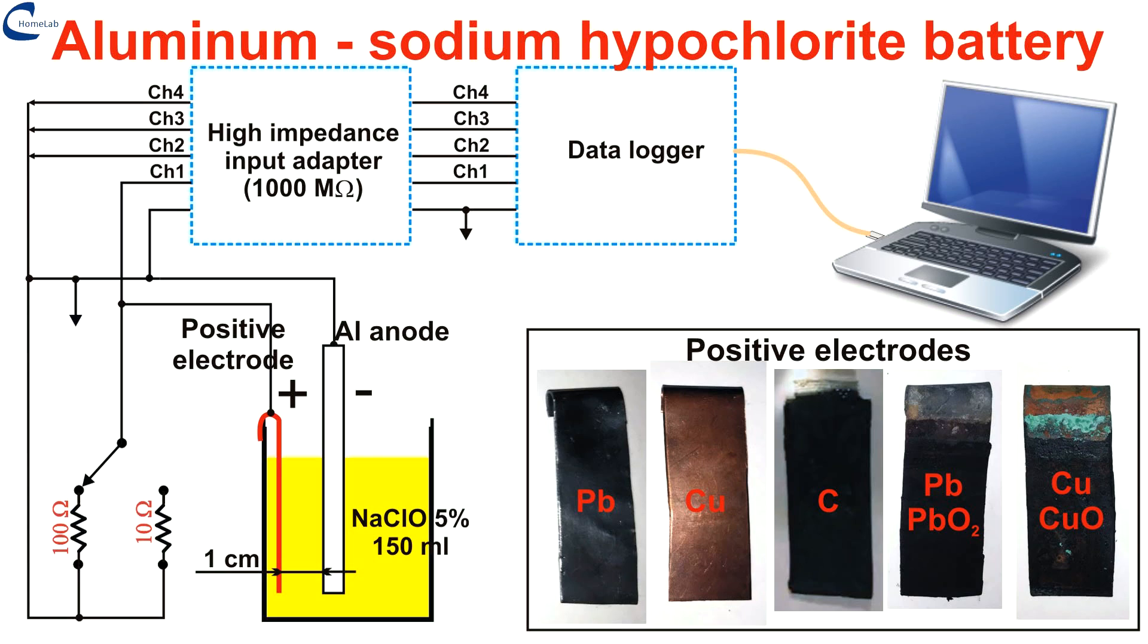Now we are talking about a primary battery, not rechargeable electrically. In this battery the sodium hypochlorite electrolyte and aluminum electrode are consumed. But once exhausted, just replace these two components and the battery is working again.